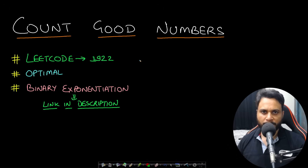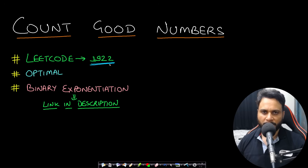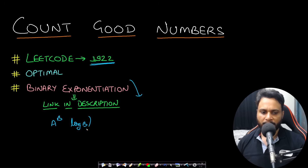Hello guys, welcome back to Tech Dose. In this video we will look at the Count Good Numbers problem, which is LeetCode number 1922. A prerequisite is to learn binary exponentiation — finding a to the power of b in log(b) time. I have already made a detailed video on this; the link will be in the description below.